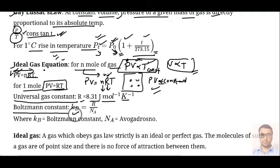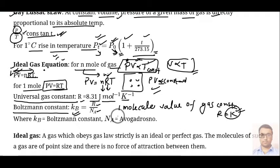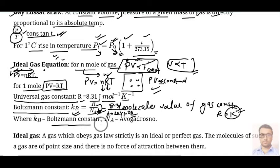Boltzmann constant K_B is defined as R/N_A. If we talk about a single molecule, the value of the gas constant for one molecule is called the Boltzmann constant — it is nothing but the gas constant for a single molecule. So we divide R by the number of molecules in a mole, that is N_A, which is also called Avogadro's number.